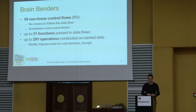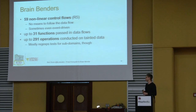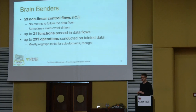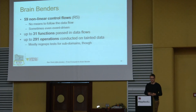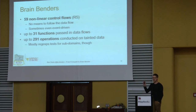For brain benders, we had 59 cases with call stack relation 5, meaning no means to follow the data flow through the code, sometimes even event-driven. In the most extreme case, 31 functions were traversed and up to 291 operations were conducted on tainted data. To be fair, those 291 operations were a horrible piece of JavaScript — a long if-else cascade checking for certain subdomains like whether it was CNN, edition.cnn, sports.cnn, and so on.